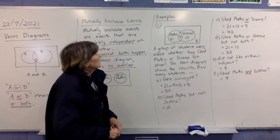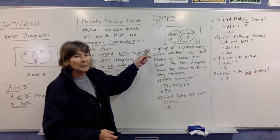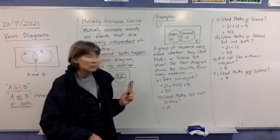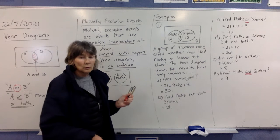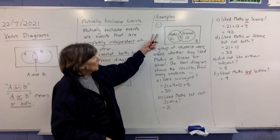Okay, now when we look at this first example here, it tells you what it's all about. So we need to read it. A group of students were asked whether they liked maths or science at school. The Venn diagram shows the results.